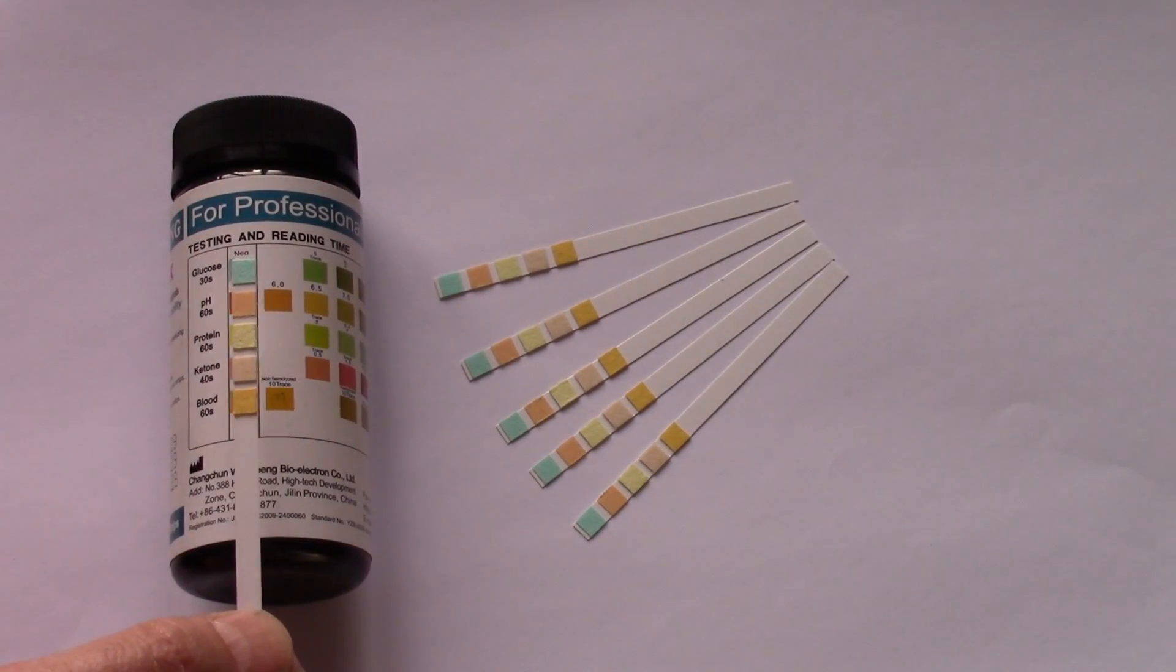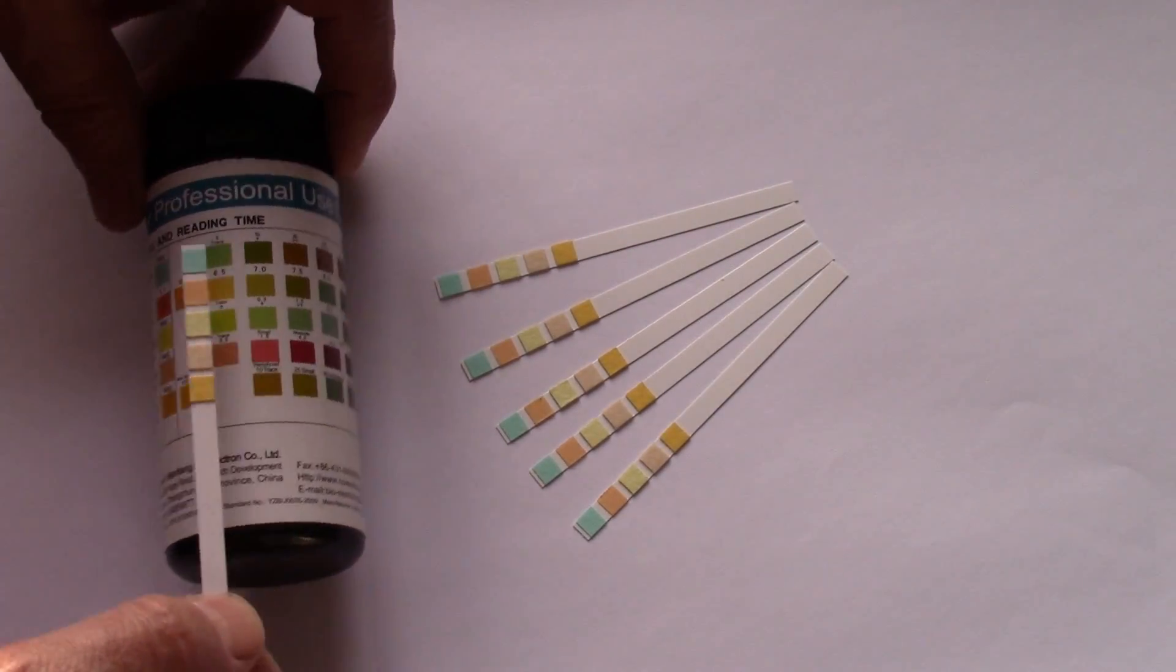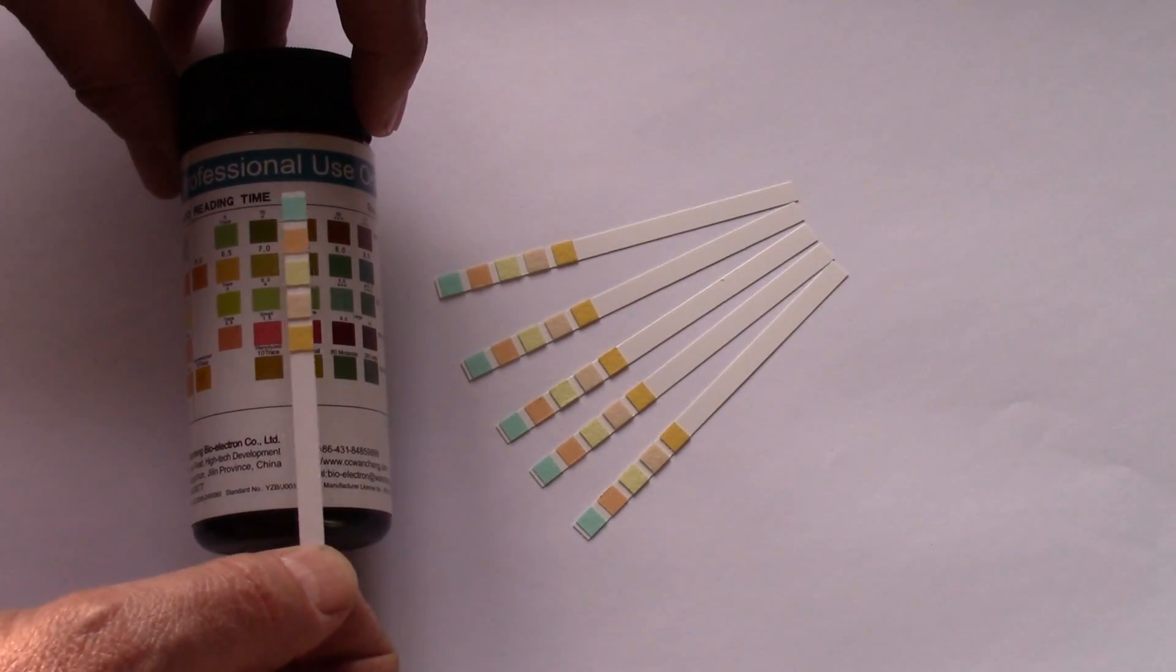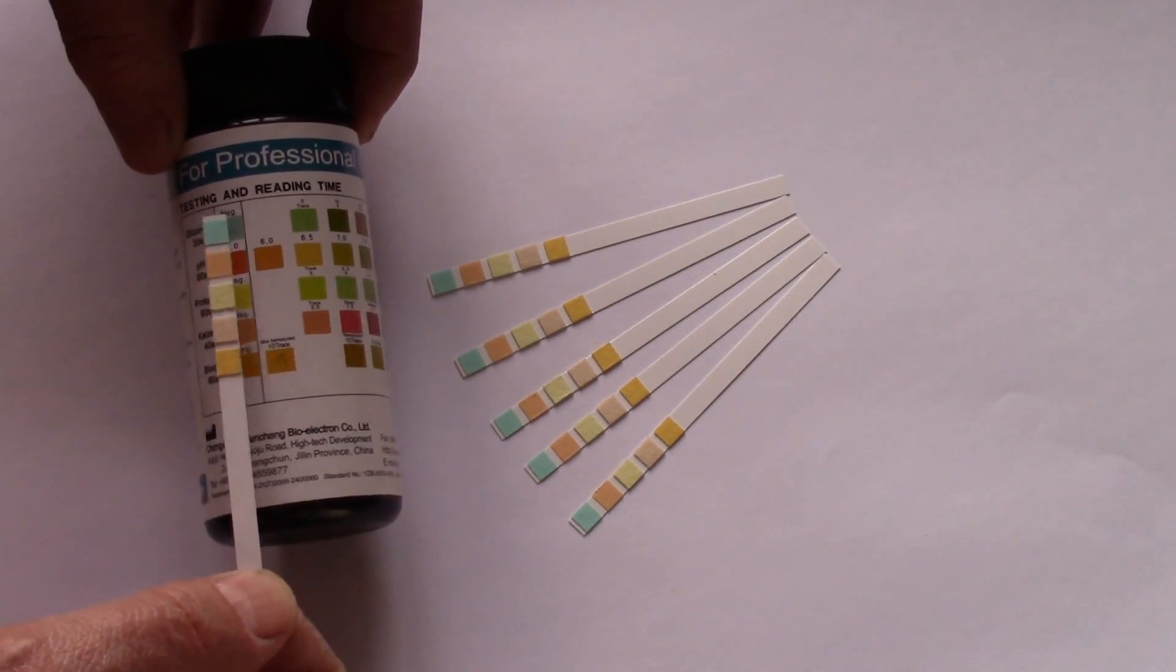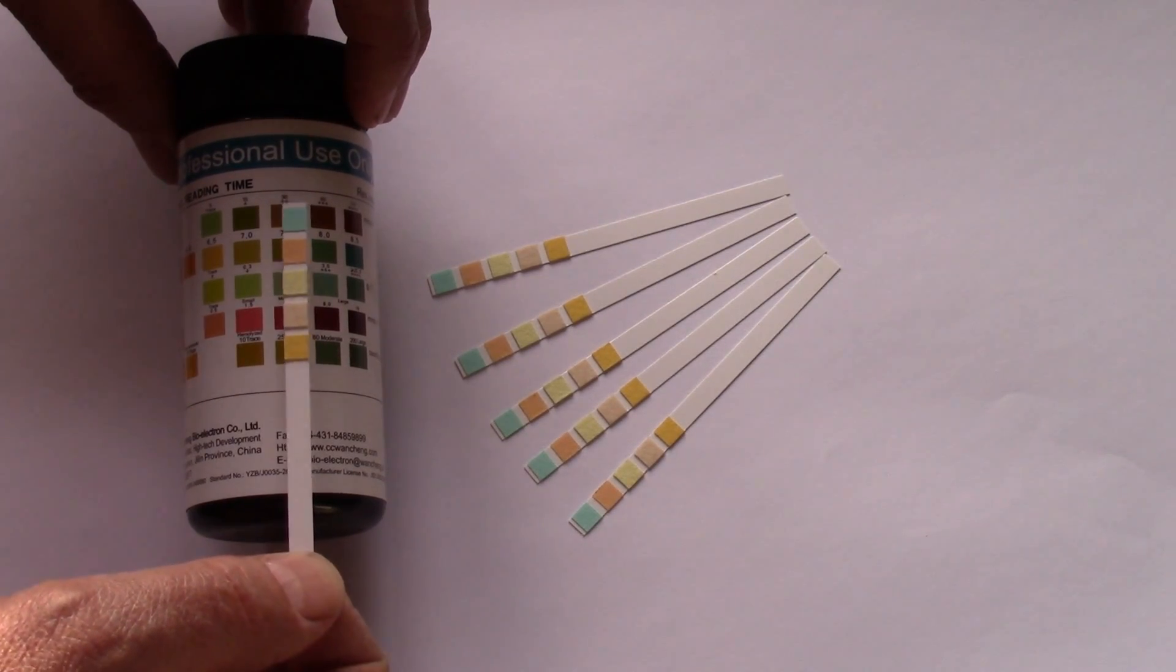So you do need a timer as soon as you start finding any abnormal results. You are comparing the color against the row at the specific time for that parameter and making a note of the level.